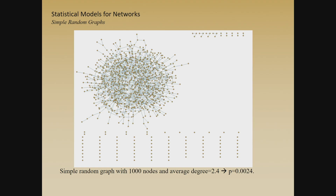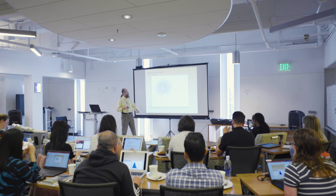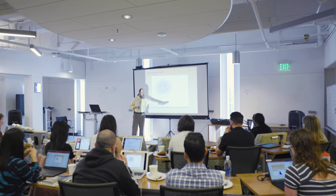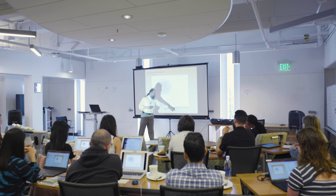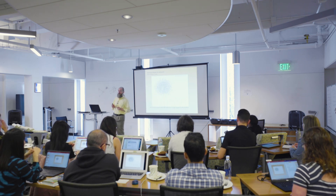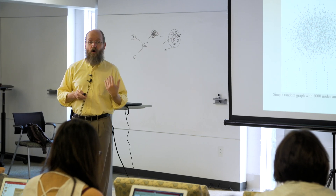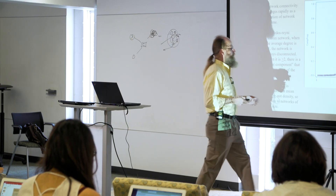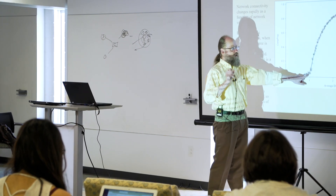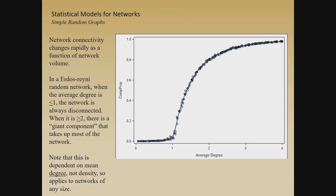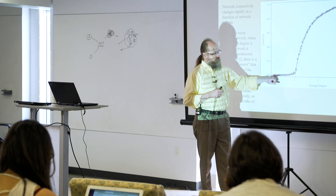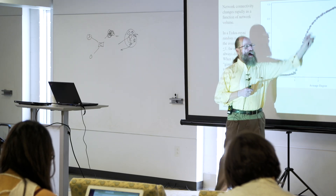These networks have really nice features. If you have a completely random graph, you always get a giant component above a certain degree threshold. If each person has just a little bit more than one tie on average, you will always get a giant connected component. Below that, you won't. The curve shows that if you have an average degree just over one, you see disconnected, disconnected, disconnected — and then suddenly you get full connectivity.